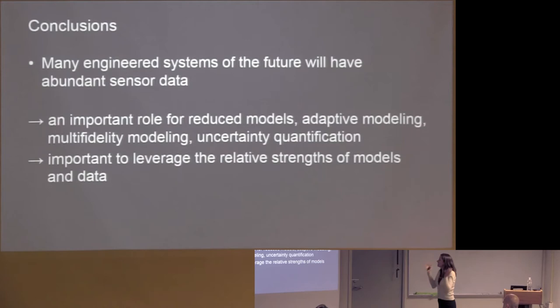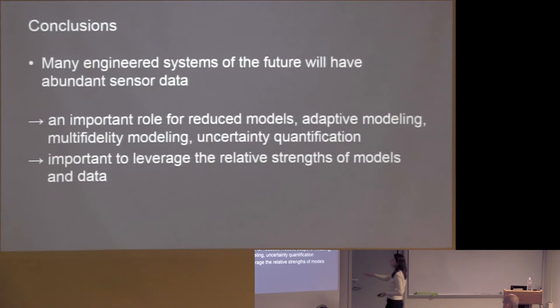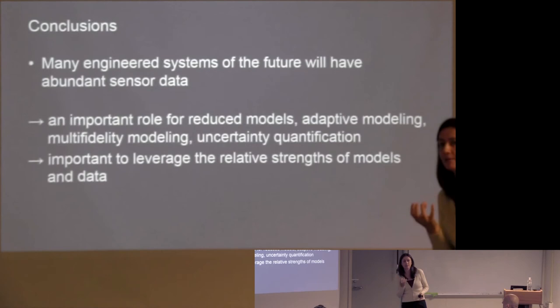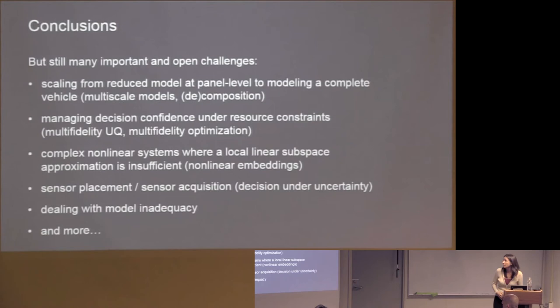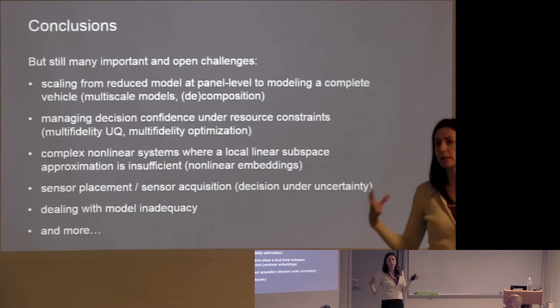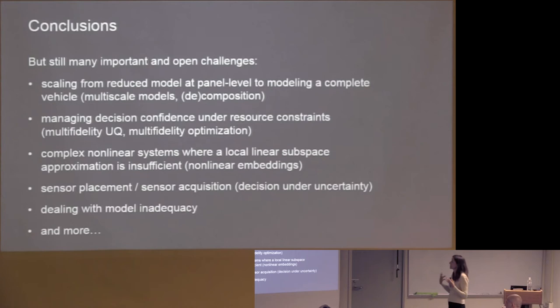Many engineering systems of the future will have abundant sensor data — as CSE people we should be excited about that. But let's not forget about the models: if we're thinking about prediction and decision making, which means scenarios you haven't yet visited, we absolutely need physics-based models. Lots of important open challenges: scale — I showed a 2D panel, we can do a wing, but a full vehicle is still beyond the scale of these methods; uncertainty quantification and how it affects decisions; complex nonlinear systems where a local linear subspace approximation is insufficient; sensor placement; and ultimately dealing with the inadequacy of our models, recognizing that even our truth model is inadequate.